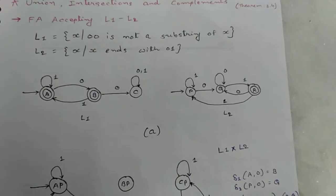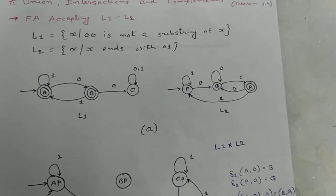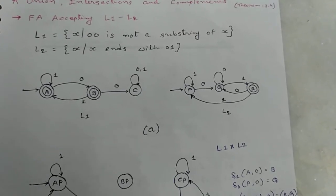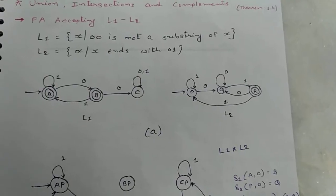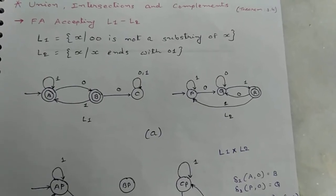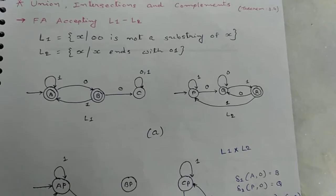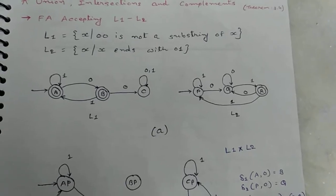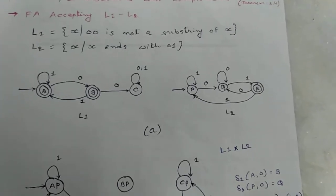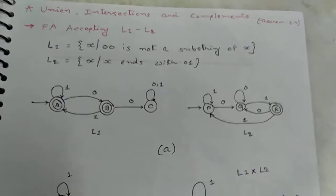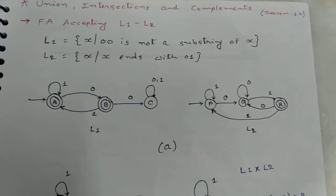In this example, either language or finite automata are given. If language is given, then convert into its equivalent finite automata. Here, FA accepting L1 minus L2.